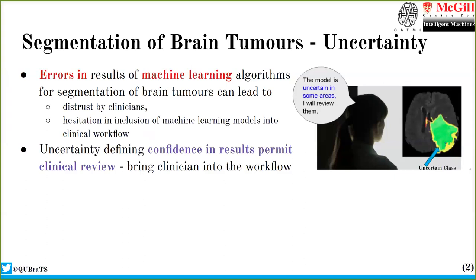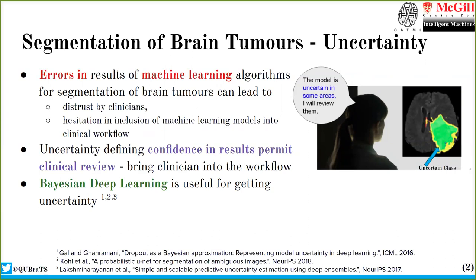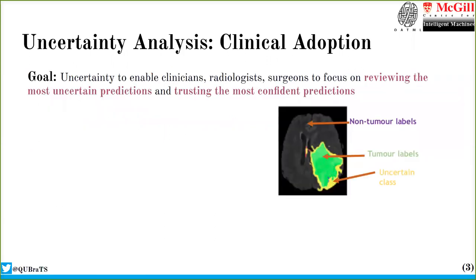So how do we solve this problem? The answer is to define confidence in the results of the models by defining uncertainties. This will bring clinicians back into the workflow. Bayesian deep learning models are useful for this as they provide not only the output but also uncertainties associated with it. This type of uncertainty will enable clinicians to focus on reviewing only the most uncertain predictions and trust the most confident predictions, helping reduce the overall burden on reviewing clinicians.